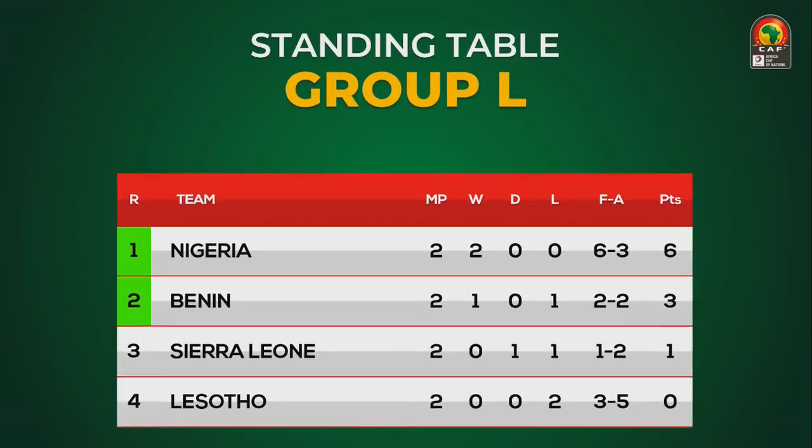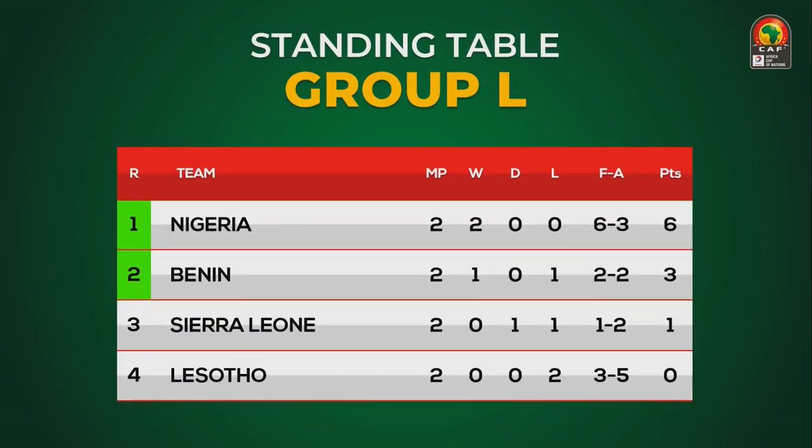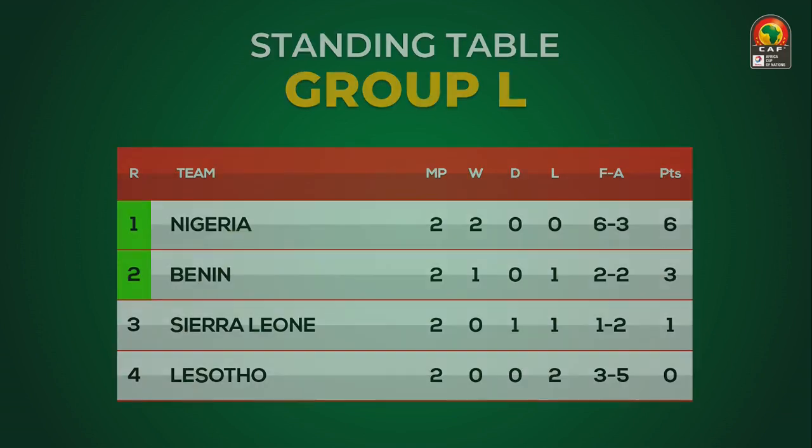In group L, the top of the table is Nigeria, followed by Benin in second, Sierra Leone and Lesotho below it.